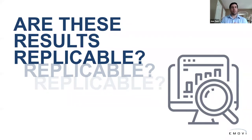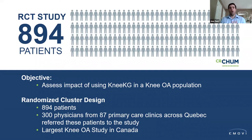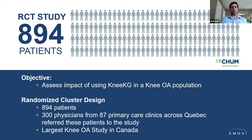Cases are great, but we want to know if these results are replicable. There was an independent study done by several large research hospitals in Canada, including almost 900 patients divided into three groups — all with knee osteoarthritis seeking care at their primary care physician. The first group had a Knee KG, but everybody was blinded to the outcomes, so that information was not used in their plan of care — that's the usual care group, treating as they would for any knee pain patient without biomechanical information.